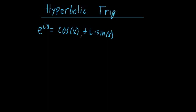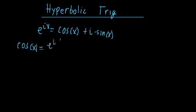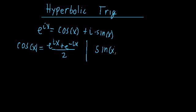We're going to start off by going back to Euler's formula: e to the ix is equal to cosine x plus i sine x. We know that we can rewrite our trig functions in terms of complex exponentials, so cosine of x is equal to e raised to the ix plus e to the negative ix all over 2, and sine of x is equal to e to the ix minus e to the negative ix all over 2i.